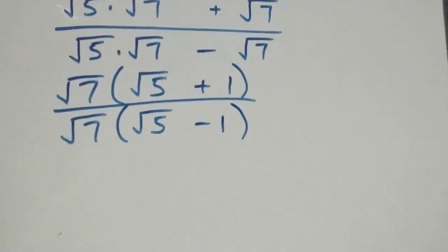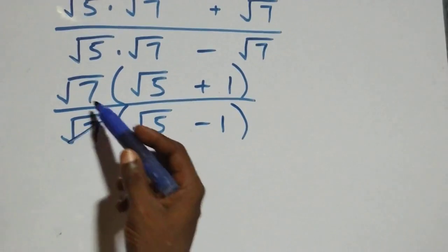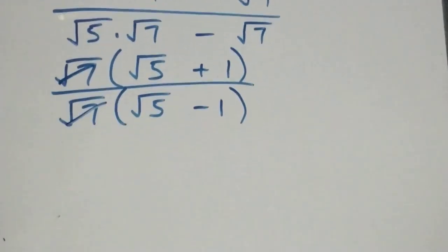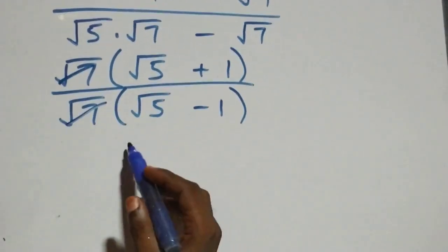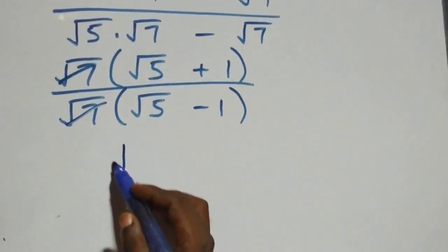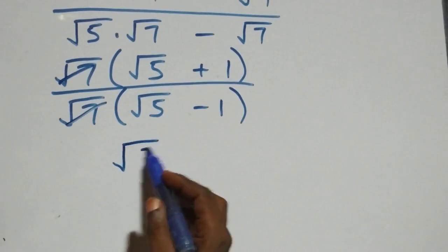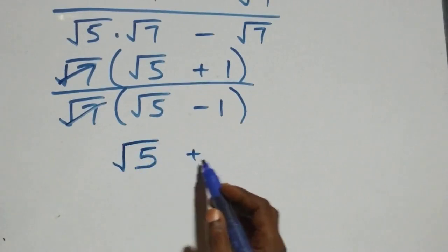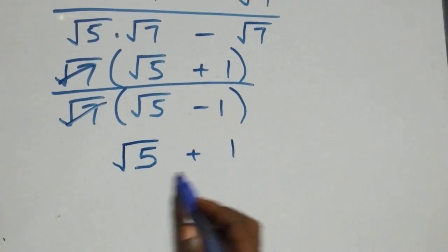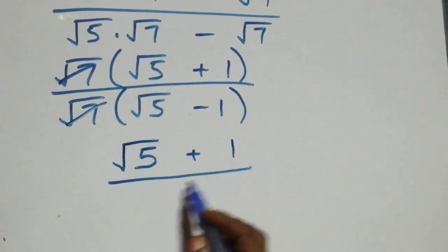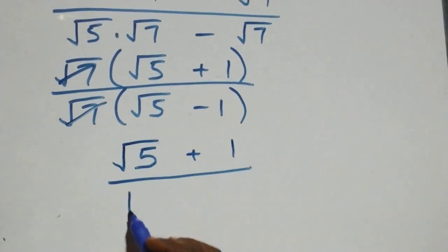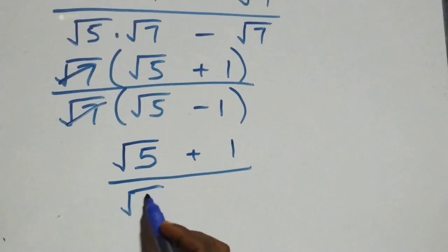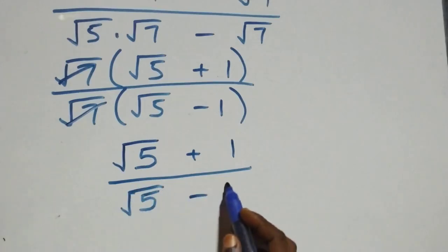Which implies root seven cancels each other, and all we have becomes (root five plus one) over (root five minus one).